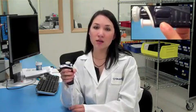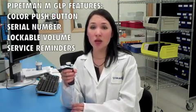The Pipetman M also has many GLP features. It has a color-coded push button that makes it easy to identify the pipette and match it with the appropriate size tips. It has a serial number, so you can match the pipette with the box, and it's fully traceable back to the manufacturer. You can lock the volume of the pipette.